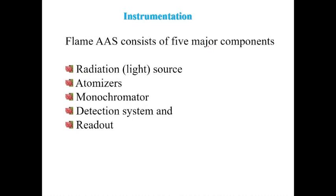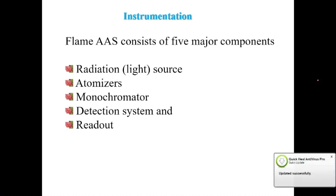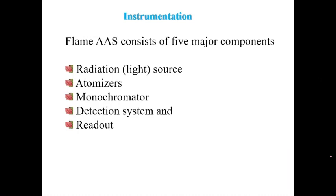The major components of flame AAS are: first, the radiation source — mostly the hollow cathode lamp; second, the atomizer — to convert sample particles into atoms; third, the monochromator — to select the unique spectral line of interest and filter out other wavelengths; fourth, the detection system — mainly the photomultiplier tube; and fifth, the readout device.